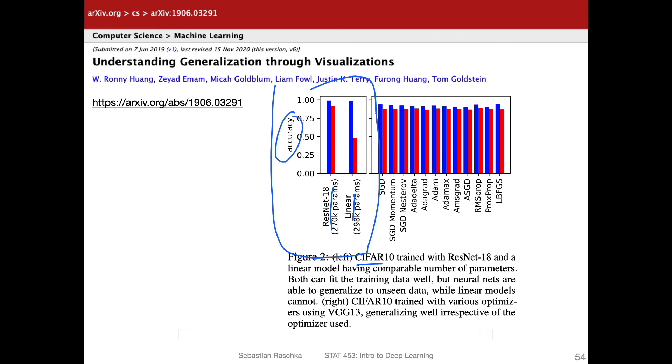Here, this is the accuracy on the test set. The blue one is the training set and the red one is the test set. You can see the training set accuracy for both convolutional networks and fully connected networks, multi-layer perceptrons here, are essentially the same, the training set accuracies. However, the test set accuracy here, that's a huge difference.